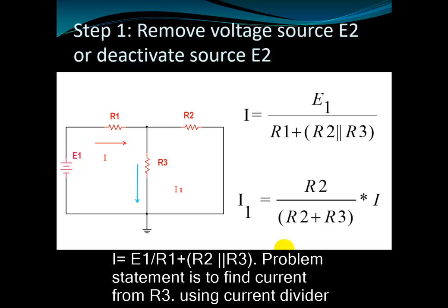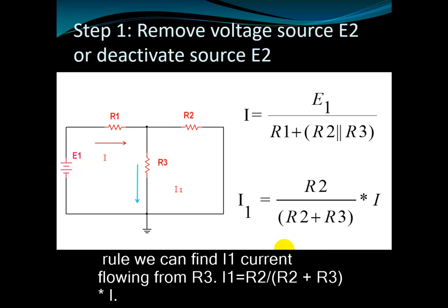The problem statement is to find the current through R3. Using the current divider rule, we can find I1, the current flowing through R3. So I1 is equal to R2 divided by R2 plus R3, multiplied by I.